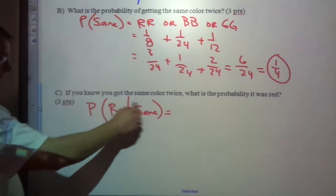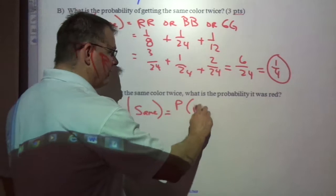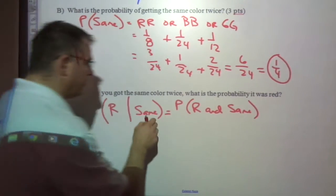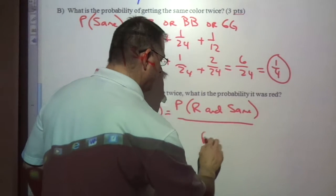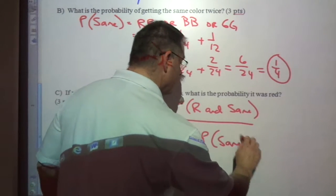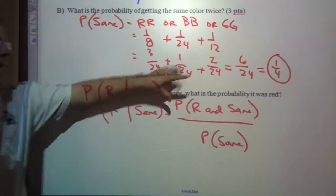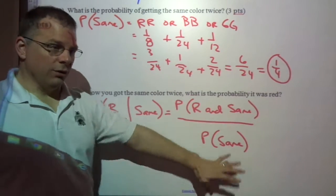We have a formula for this conditional probability. It's this, both of these together, probability of red and the same, divided by the second one. Probability of being the same. This is the formula we're going to use. A given B means A and B over B.